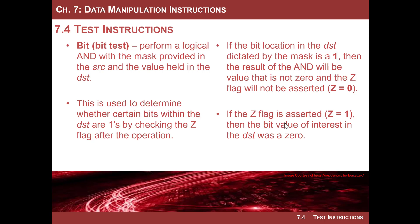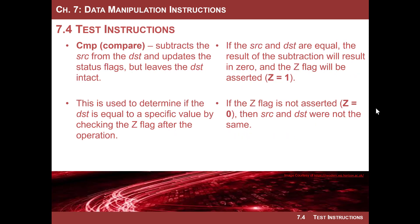Similarly, if the AND operation with the mask resulted in all zeros, the destination bit was zero, and the Z flag equals one. If it resulted in a non-zero value, the Z flag is not asserted. The BIT operation will not destroy the contents of the destination — it just sets the Z flag, or sets them all, but the Z flag is what we care about.